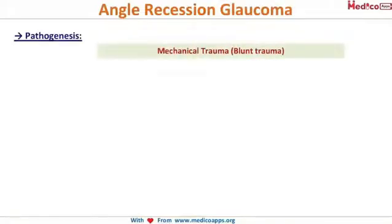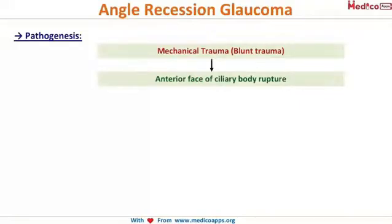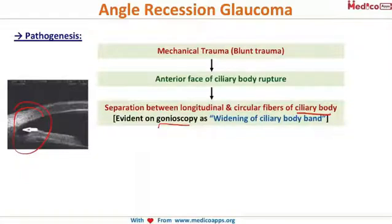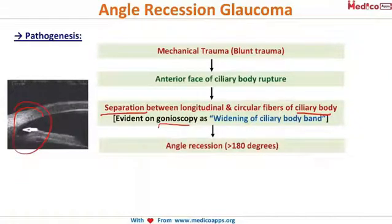When there is a blunt mechanical trauma to the eye, the anterior face of the ciliary body will rupture. When the ciliary body ruptures, there is a separation between the longitudinal and the circular fibers of the ciliary body, which you can see on this image and on gonioscopy. This leads to a widening of the ciliary body band and results in angle recession.